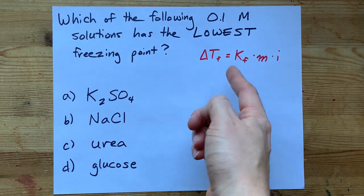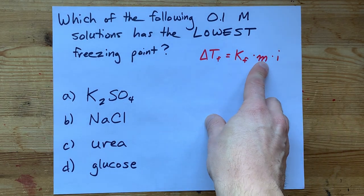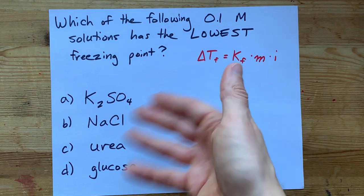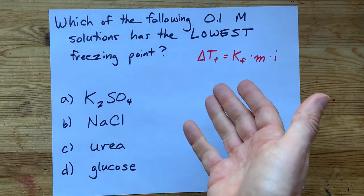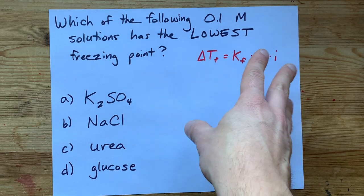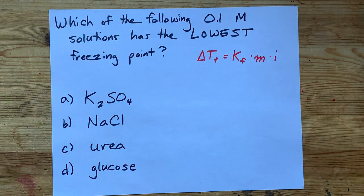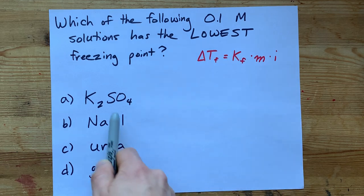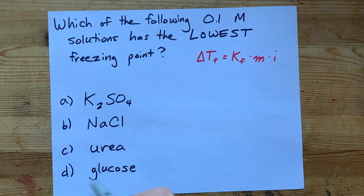That's a constant for water, molality, which is proportional to molarity as long as you're all dealing at the same temperature, and i, which is something called the Van't Hoff factor. The cryoscopic constant for all of these solutions is the same because they're all in water.